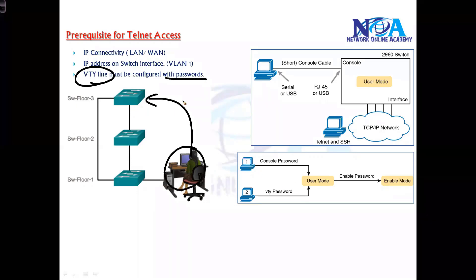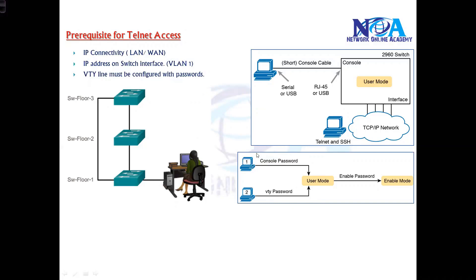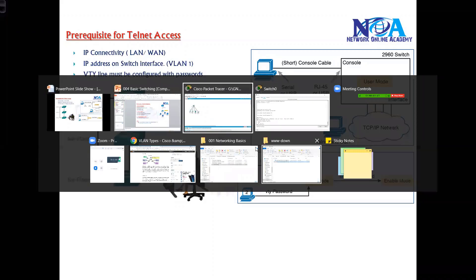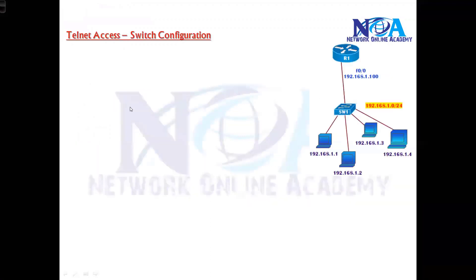The third prerequisite is that you must configure the VTY line with a password. When we enter into the switch through the VTY — virtual terminal connection — that line must have a password, just like we configure the console password. There are two ways to enter into the command line: VTY or console. Password assignment for VTY is similar to console password assignment. These are the three prerequisites for telnet access.